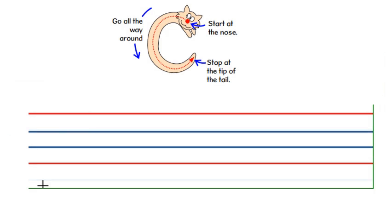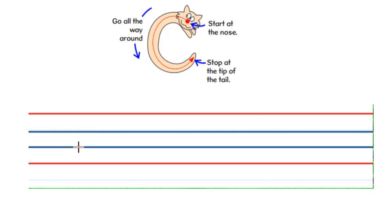So what do you know about letter C? The letter C has the sound 'K'. Both big and small C have the same shape — it looks like a cat lying down. You have to start from the nose and go all the way around and stop at the tip of the tail. The little C fits between the middle area, that is between the two blue lines — the aeroplane line and the grass line.